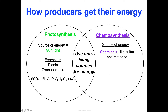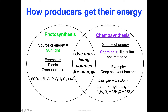Now chemosynthesis — the source of energy for chemosynthesis is chemicals like sulfur and methane. This is a much more rare process; the majority of our producers are doing photosynthesis. An example of chemosynthesizers are deep-sea vent bacteria. They use carbon dioxide in this reaction and also make glucose, but it's a totally different situation. We're going to spend a whole concept on photosynthesis.